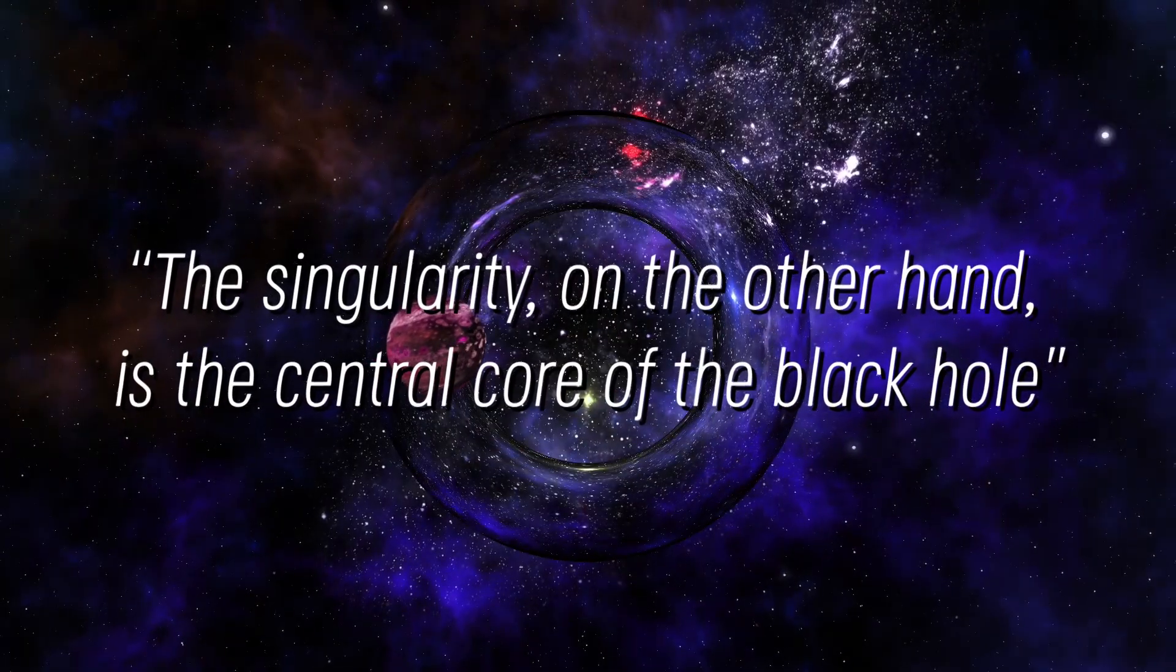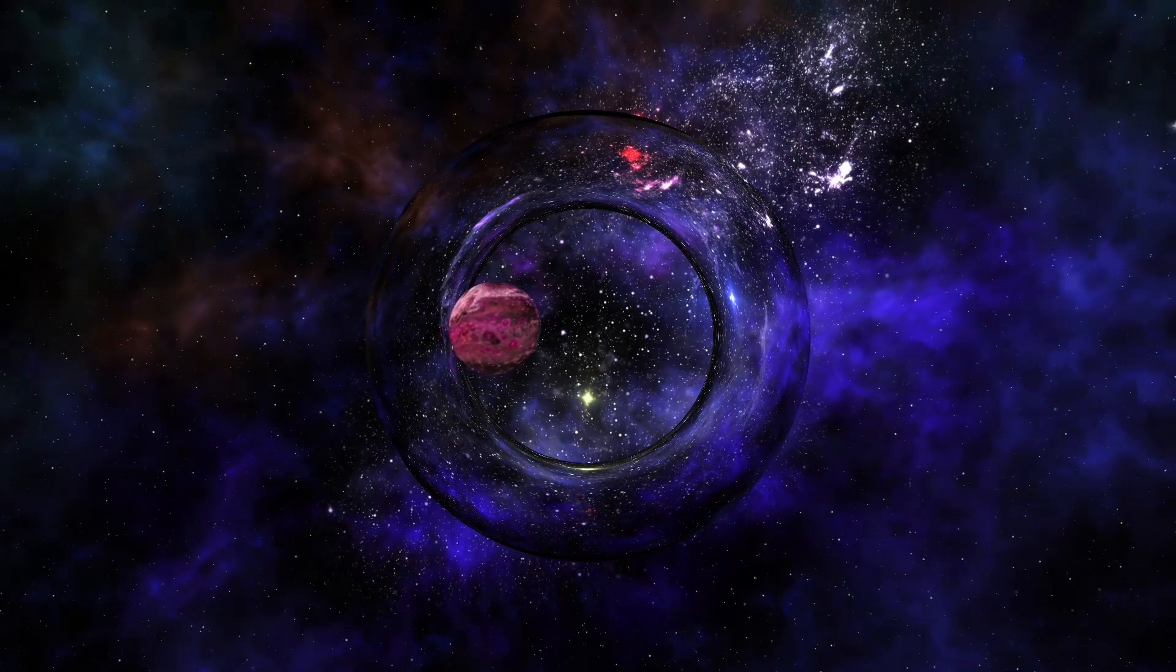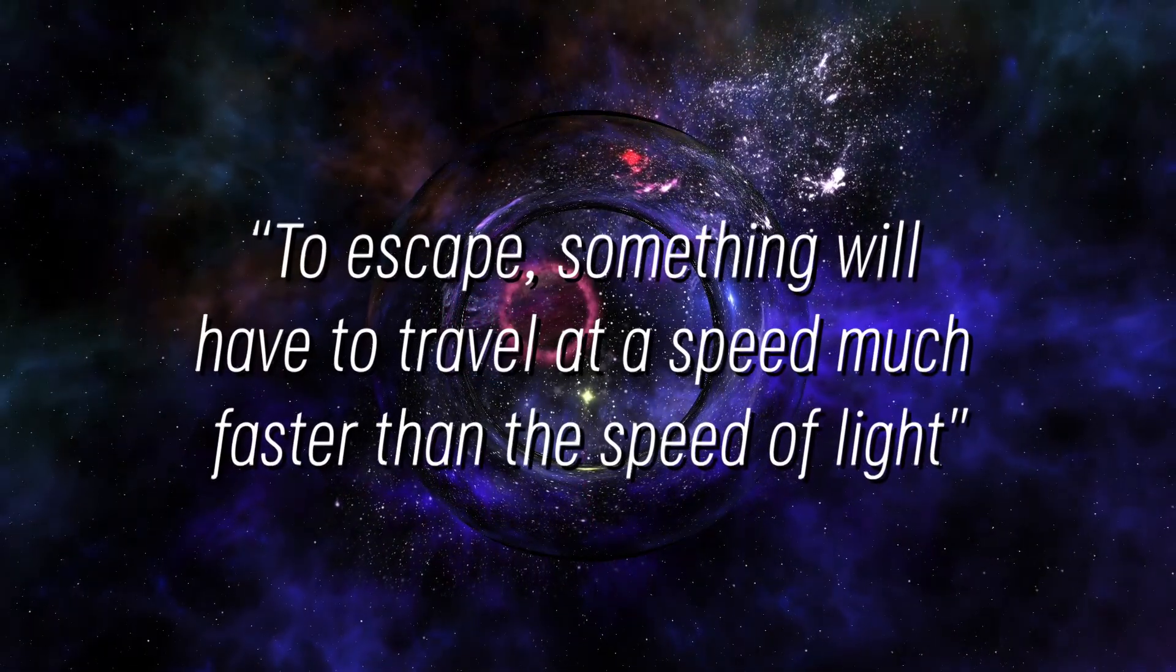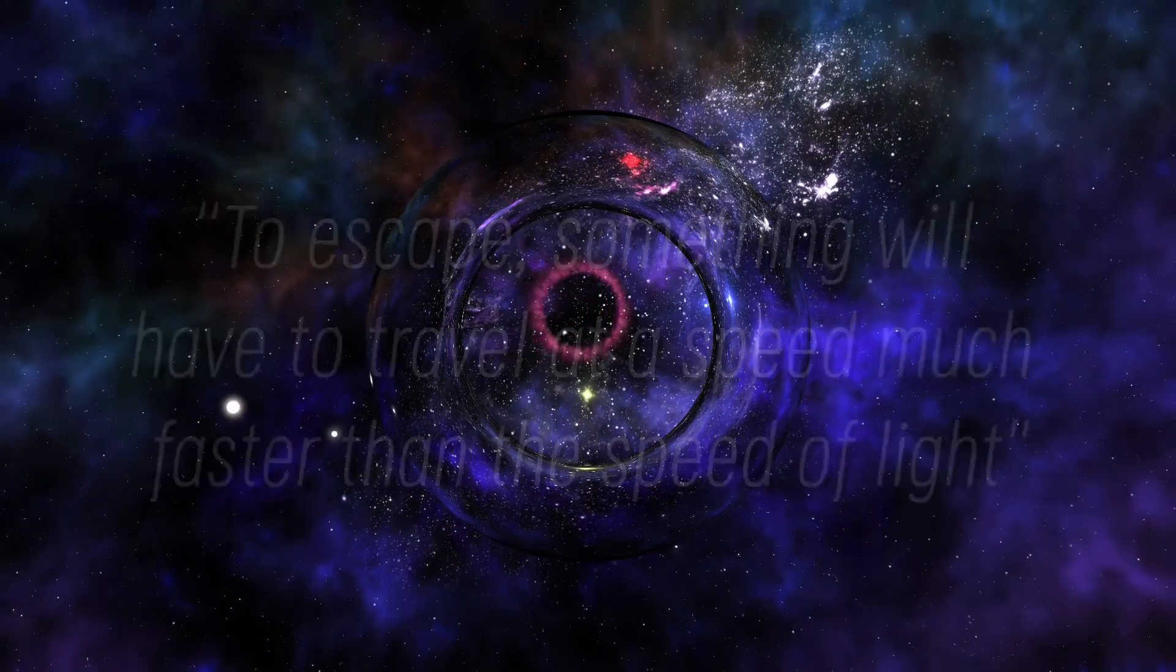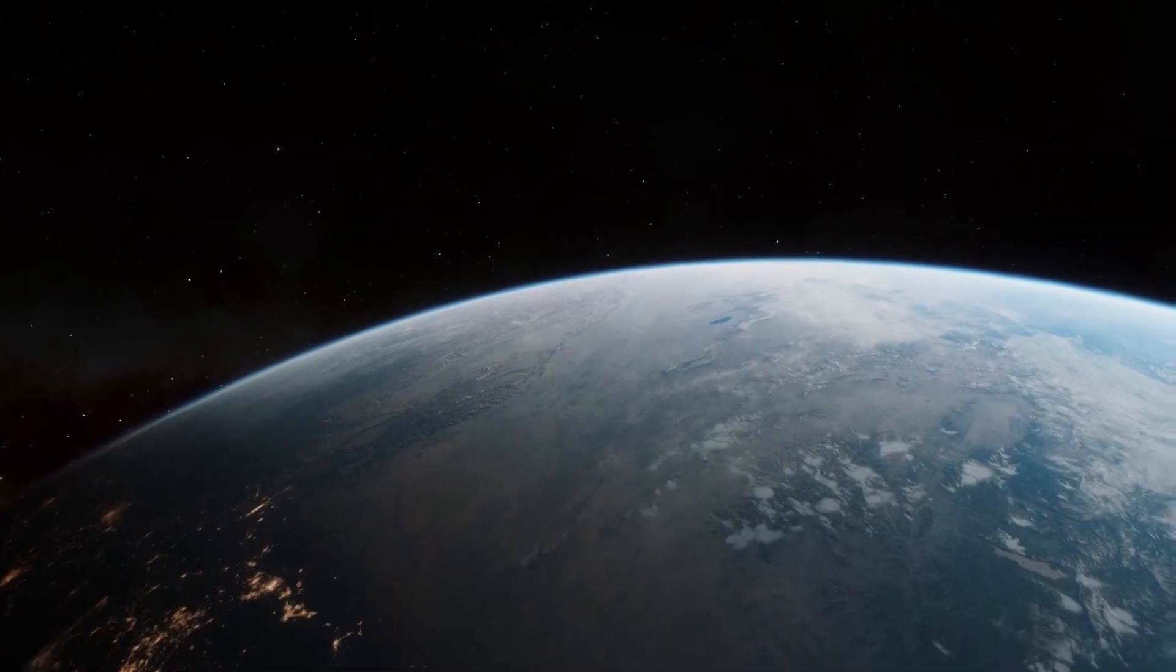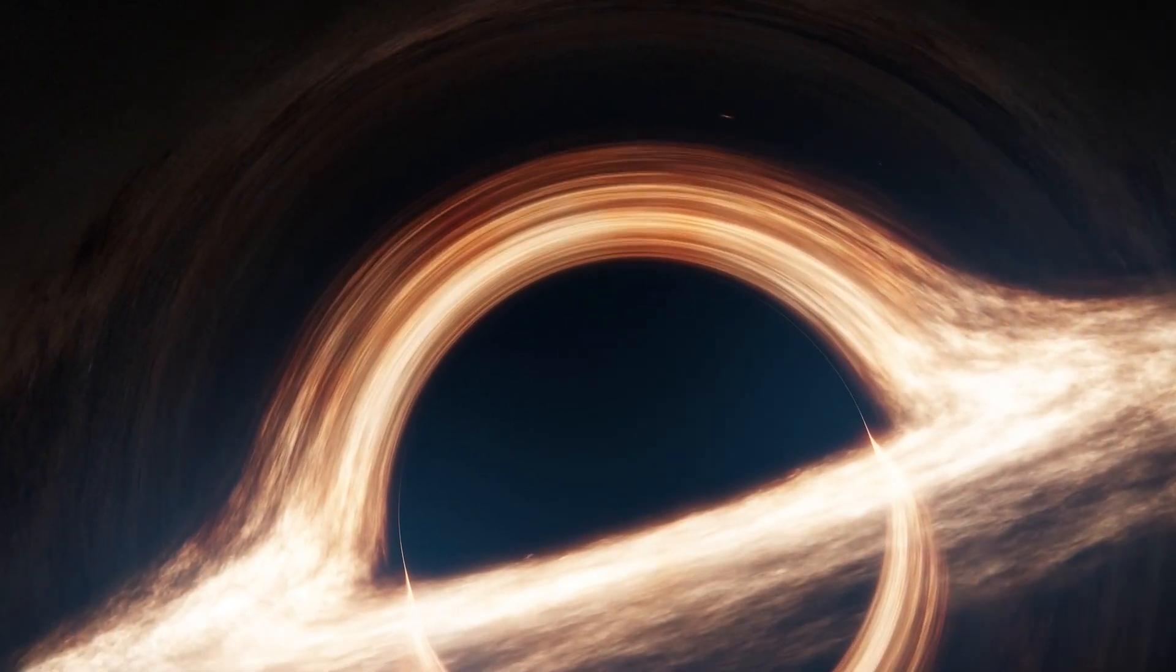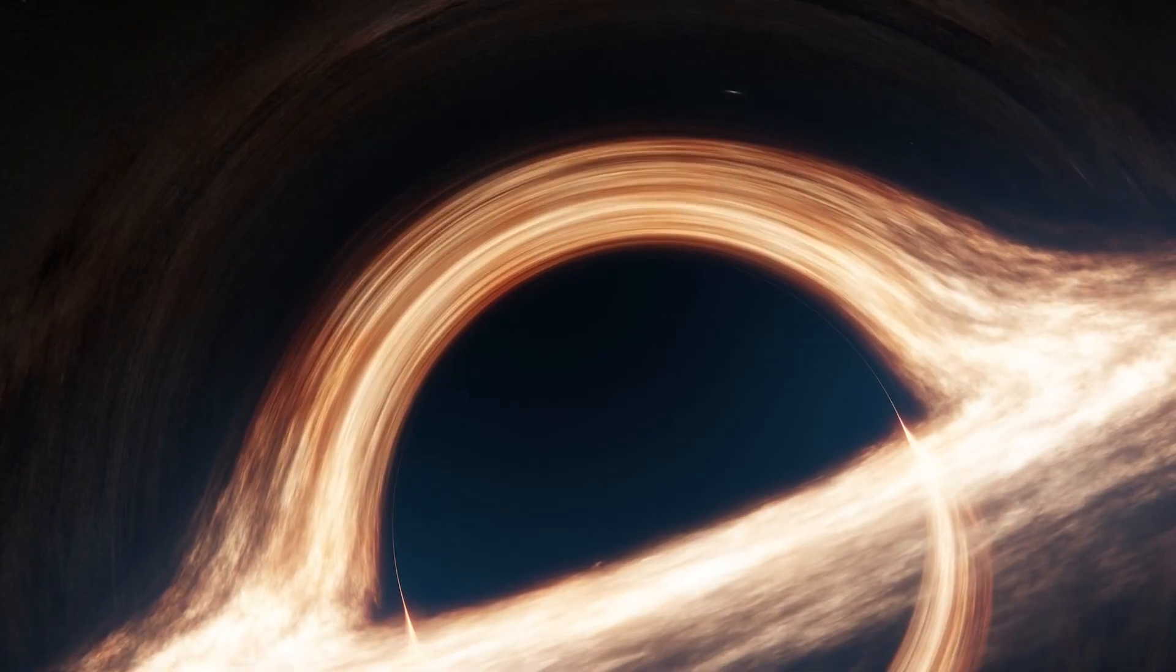The singularity, on the other hand, is the central core of the black hole, where gravity is so intense and constant that literally nothing can get out of there. To escape, something will have to travel at a speed much faster than the speed of light, which has so far proven impossible. It is important to note that gravity on Earth works differently. If it were similar to black hole gravity, we would not be able to survive the way we do once we have crossed the event horizon.